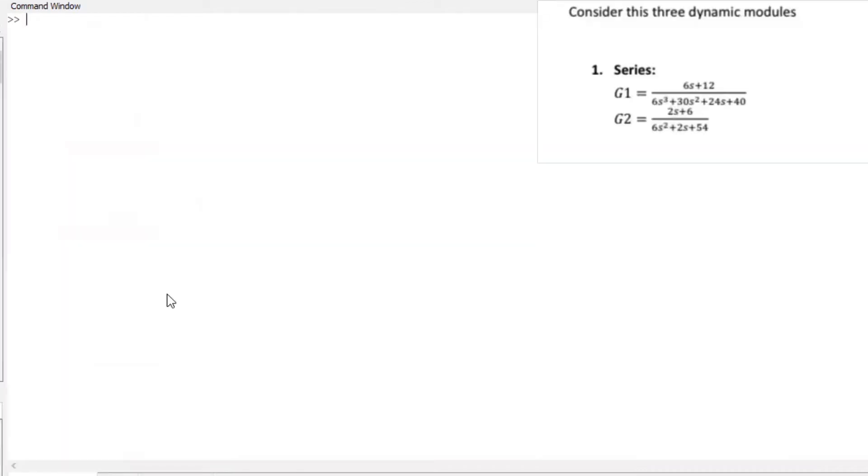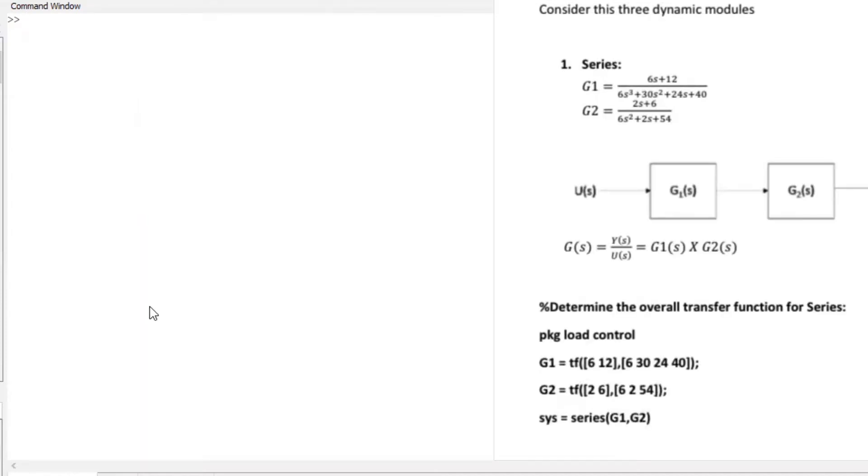So here's our equations that we have guys. Let's start with series. Now that we have series, if you have done process control you have learned that your series functions, the block diagram can be presented in this format here. So what if you want to find the general transfer function using Octave? I mean manually you can use pen and paper, but what if you want to incorporate Octave?